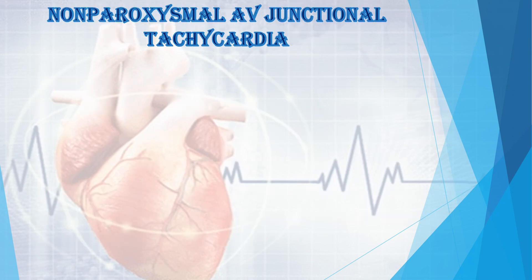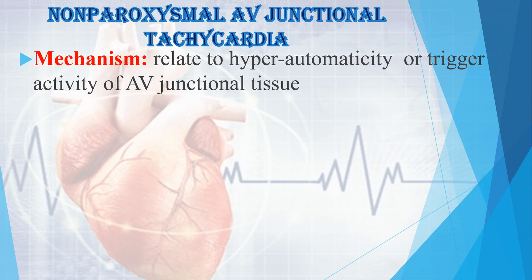Non-Paroxysmal AV Junctional Tachycardia: the mechanism is related to hyper-automaticity or triggered activity of AV junctional tissue. If you refer to my previous videos, I discussed the normal cardiac conduction system and normal ECG. In Non-Paroxysmal AV Junctional Tachycardia, hyper-automaticity or triggered activity of the AV junctional tissue leads to this condition.